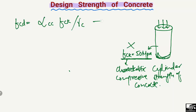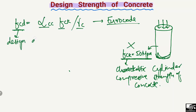This formula is given by the Eurocode. In different codes you will find different formulas, but the main principle is the same — we reduce the design strength of the concrete to have more confidence in our design. Here, fcd is the design strength of the concrete.